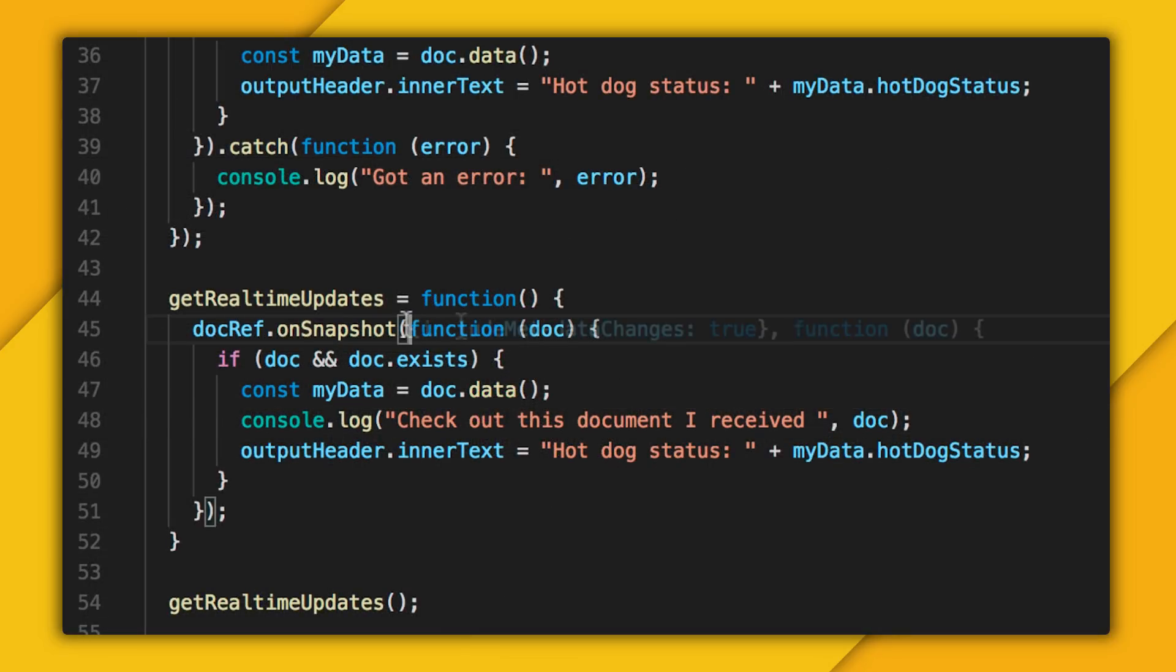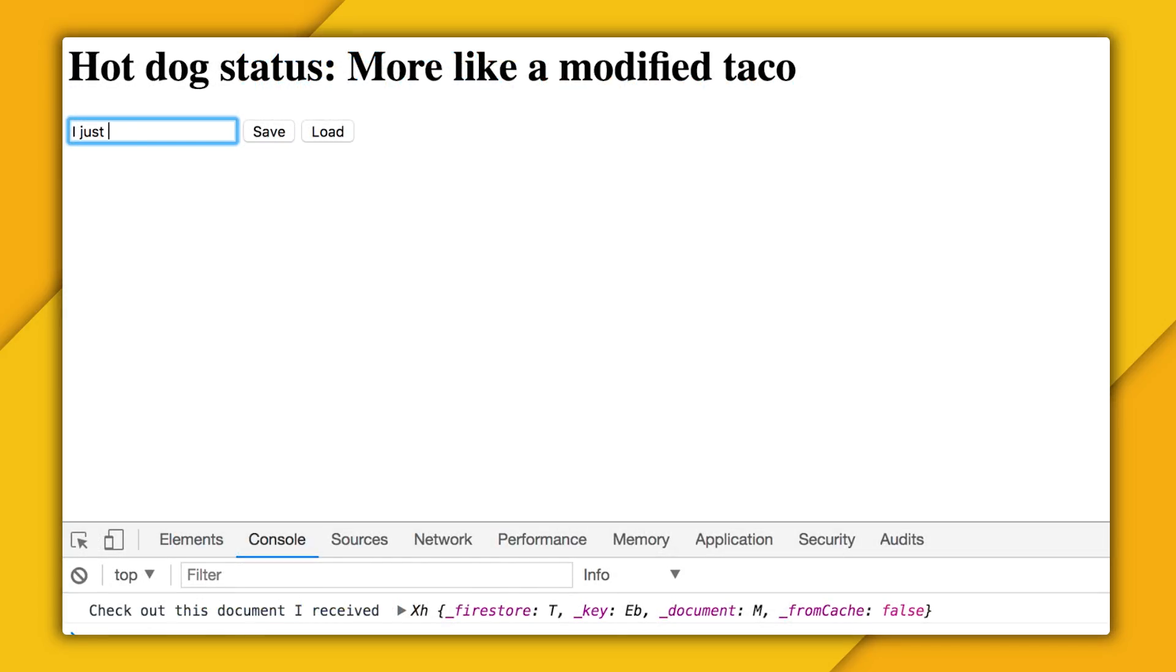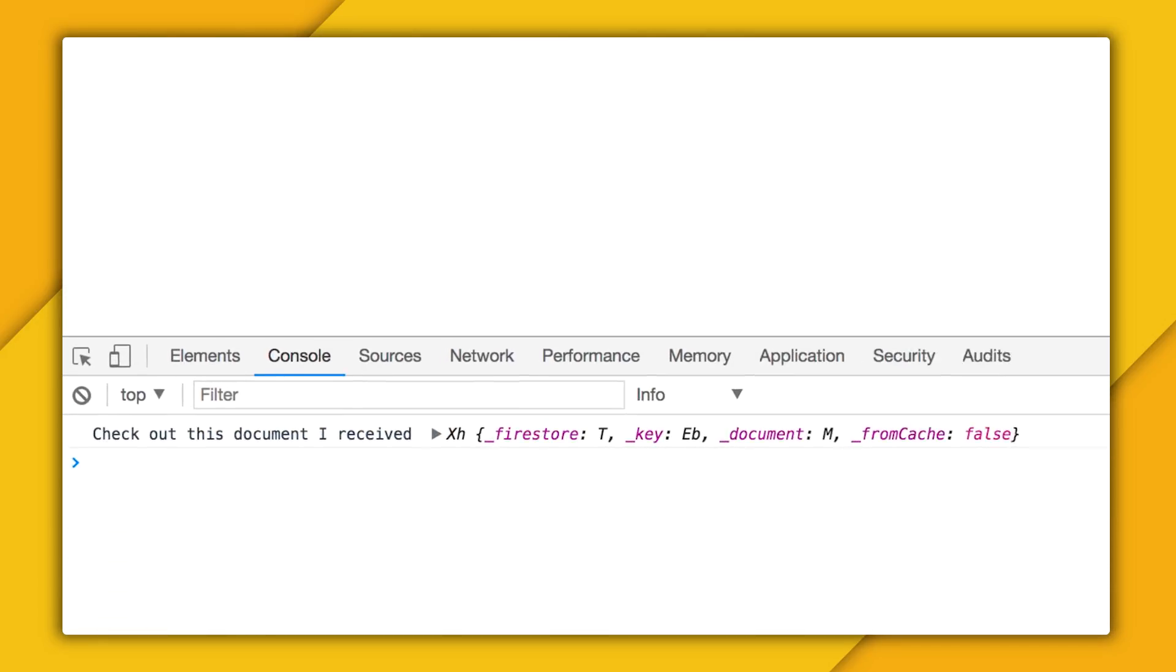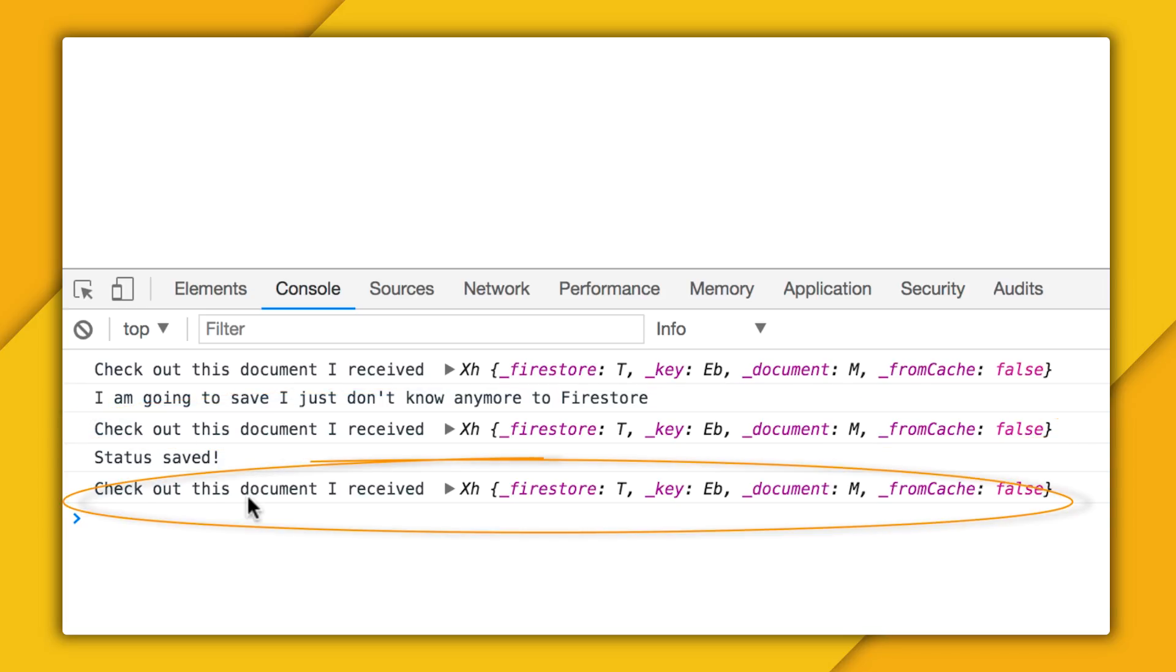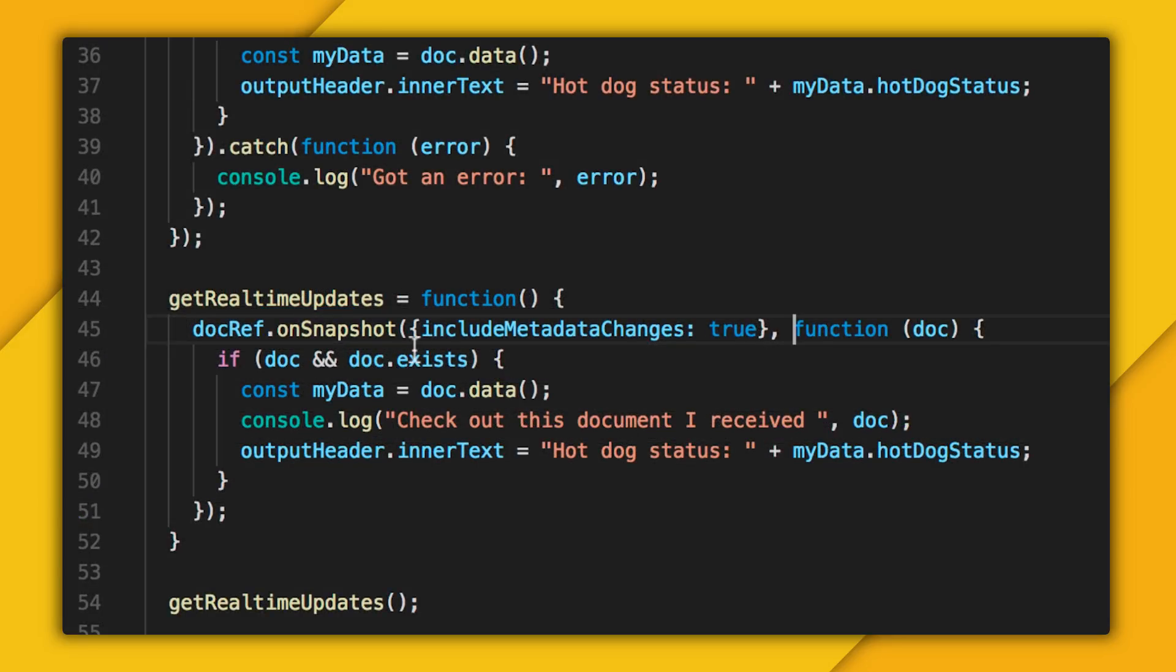Now if you wanted, you could have this event fire even when just that little bit of metadata changes. And that's something you could add in your listener like so. And you can see that when I make an update now, my OnSnapshot event fires twice, once for the local update and once again when the server comes back with that same update. Now there may be times when this behavior is what you want, but honestly, most of the time the default behavior works just fine. So I'm going to go back to that.